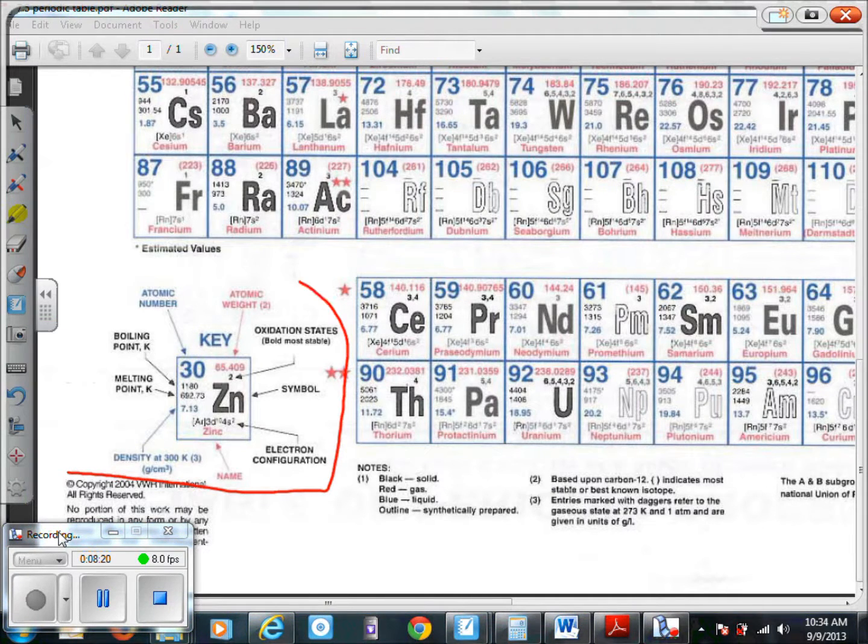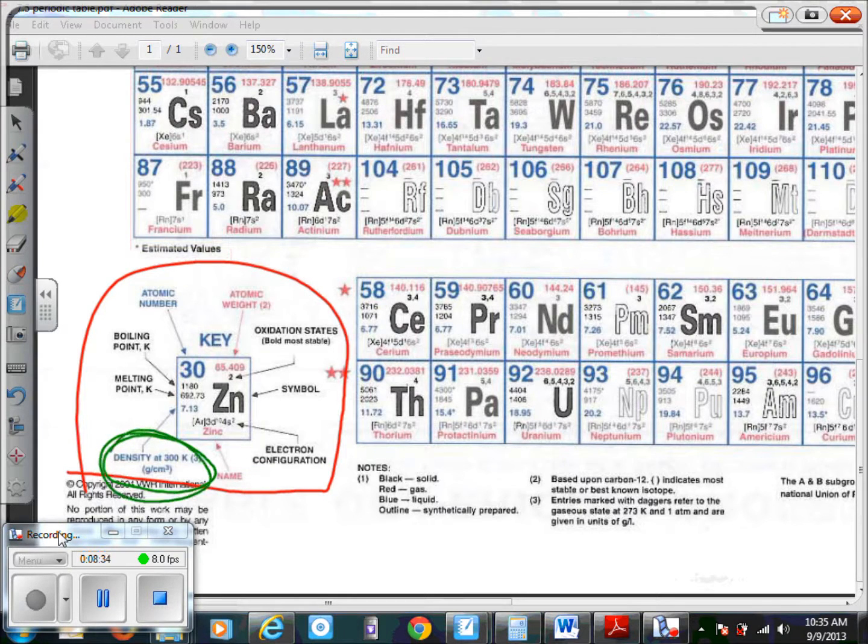So if you look right down here, this is the key to what all these numbers are. You have all these boxes with all these different elements, and the one that we're looking at today is density. Notice the label for the density on this is grams per cubic centimeter.